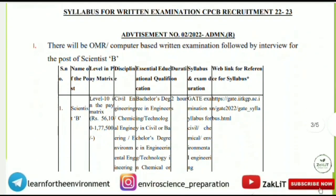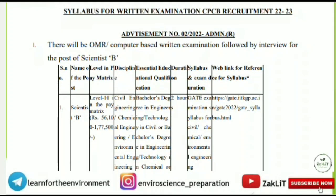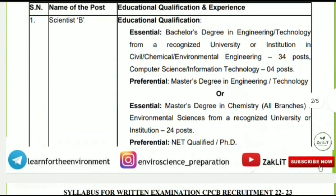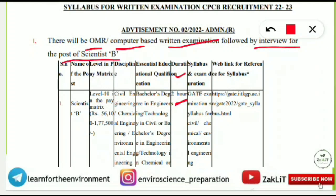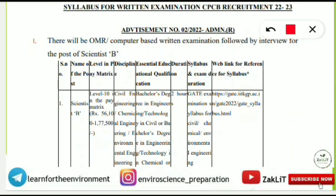If you have any doubts, ask in the comment section or the Telegram group. Regarding the exam pattern for Scientist B: the exam duration is two hours and it will be an OMR-based computer-based written examination with MCQ questions. After the written exam, shortlisted candidates will be directly called for an interview. This pattern applies to every Scientist B position.